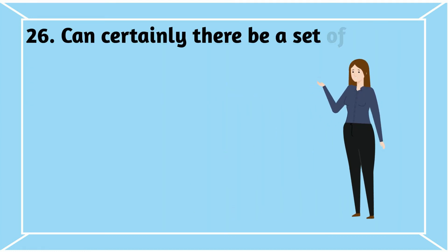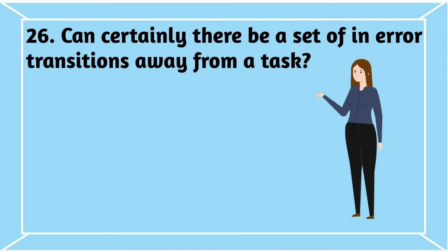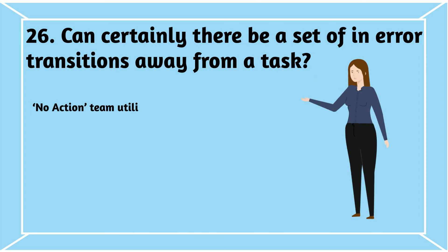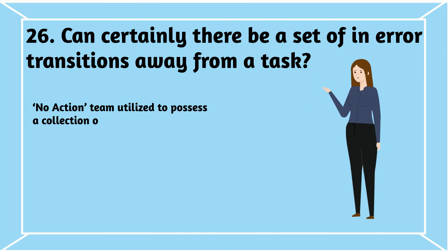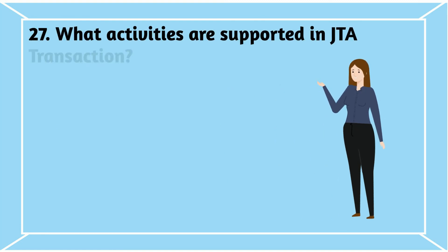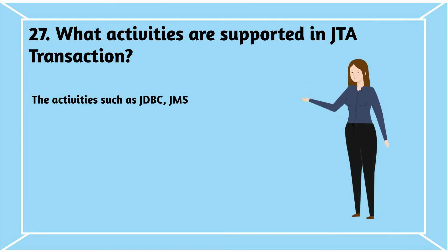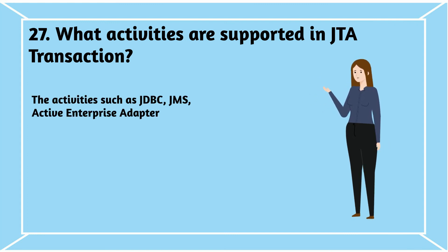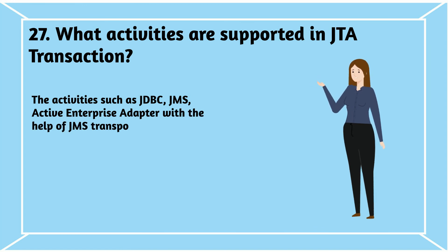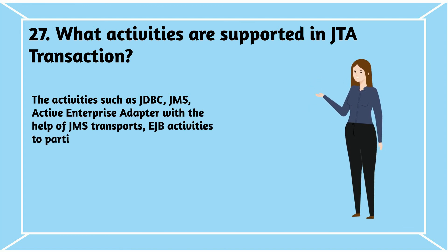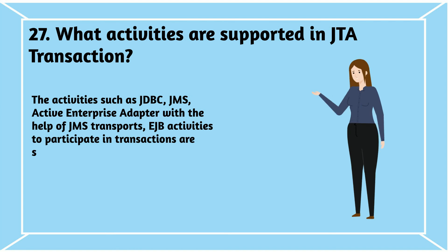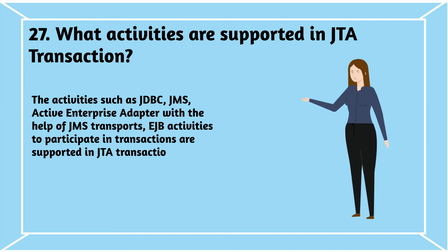Question 26: Can there be a set of error transitions away from a task? No — a group is utilized to possess a collection of tasks having a usual mistake transition. Question 27: What activities are supported in JTA transactions? Activities such as JDBC, JMS, active enterprise adapter with JMS transports, and EJB activities to participate in transactions are supported in JTA transactions.